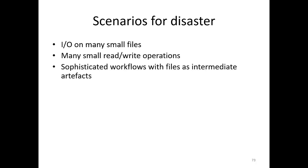Scenarios for disaster: IO on many small files, many very small read and write operations, and sophisticated workflows with files as intermediate artifacts. The reason this is potentially disastrous is that there are many metadata operations — modification dates of files are changed, access dates are changed, and so on. Each time you do a small write, you get quite a number of metadata operations, which is bad for file system performance.